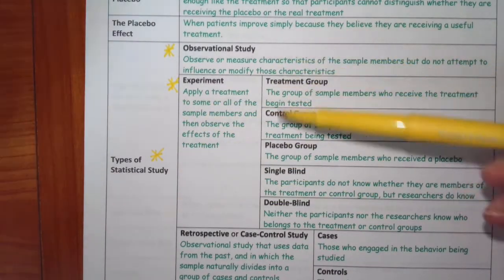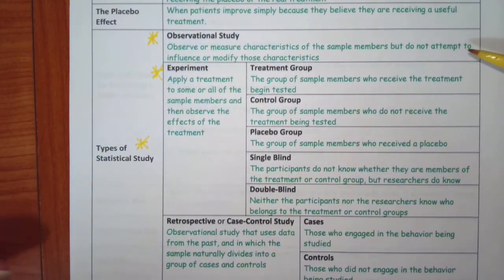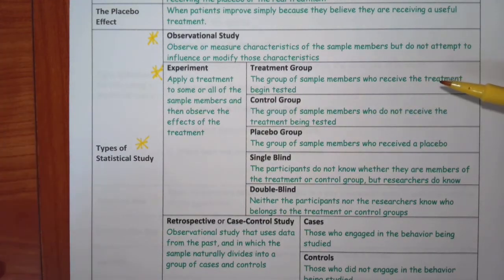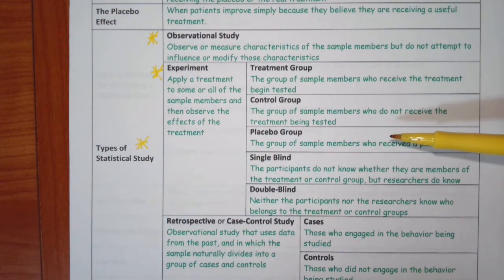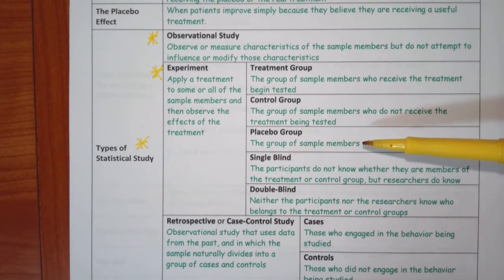The types of statistical studies are observational or experiment. Observation is when all you do is observe. You do not attempt to influence or modify the characteristics. You just watch and see what people do and record the data. I think one of the examples we did in class was about eating green leafy vegetables. And so you don't force them to eat the vegetables or not eat the vegetables. You just observe the results of those who do and those who do not. An experiment, then, is when you apply a treatment to some or all of the sample members and observe the effects. So again, if you want to use the leafy vegetable thing, you would split the group and give half of them, force them to eat green leafy vegetables, and the other group don't allow them to eat leafy vegetables.